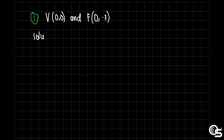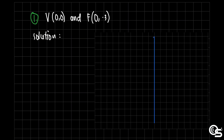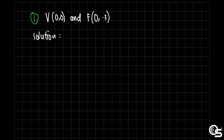Since the focus is at (0, negative 3), from the vertex at (0, 0), we can say that it traveled 3 units downward. So that would be in terms of y. We can say that the focal distance, denoted as p, will now be negative 3.